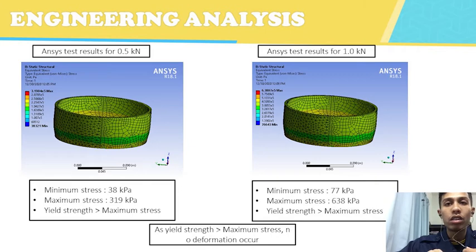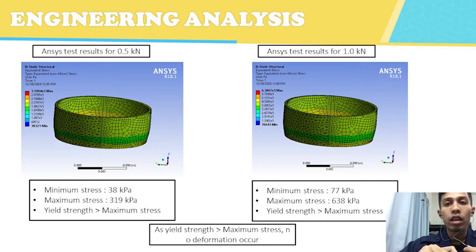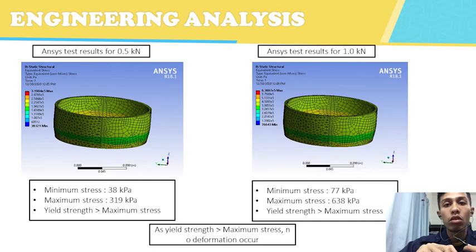Next is our engineering analysis. We made an analysis using NC software and tested our circular blade. We tested two forces: 0.5 kN and 1.0 kN. When 0.5 kN force is applied to the circular blade, we get a minimum stress of 38 kPa, and the yield strength is higher than the maximum stress. For the test at 1.0 kN, we get a minimum stress of 77 kPa, a maximum stress of 638 kPa, and the yield strength remains higher than the maximum stress. As a conclusion, since the yield strength is higher than the maximum stress, no deformation is expected.